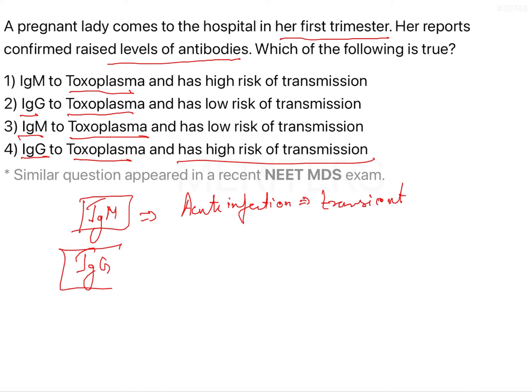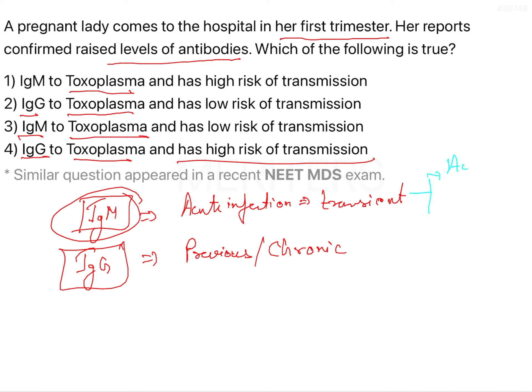Then we have IgG. This IgG tells you about a previous infection or a chronic infection. This IgG antibody appears after some time of infection. IgM generally appears first, and after some time when its level starts decreasing, IgG starts increasing and it persists for a longer duration of time. So IgM generally tells you the acute infection — it is a transient indicator showing a recent infection if it is increasing.